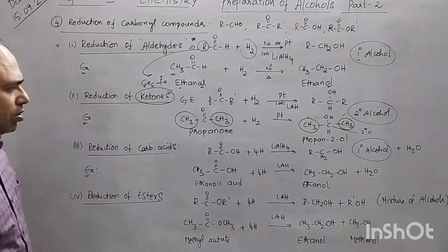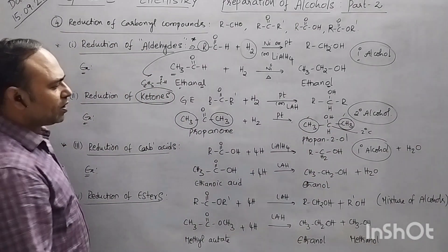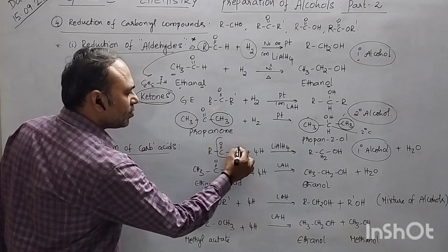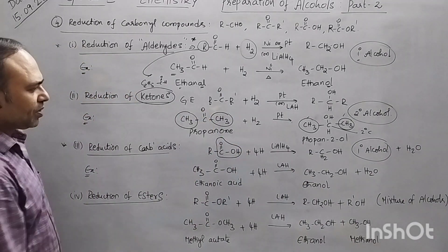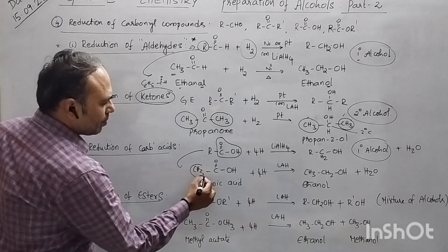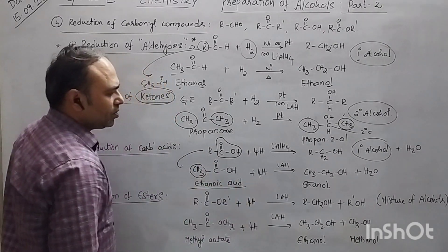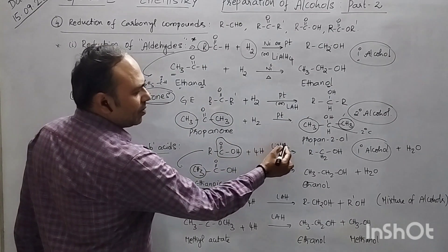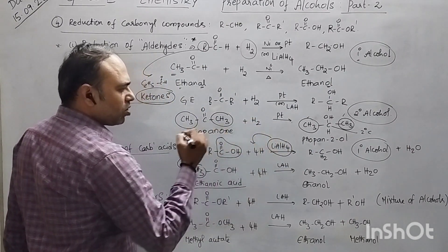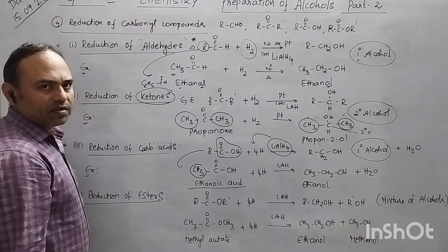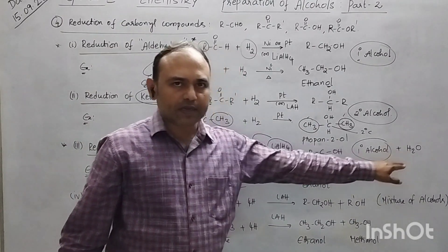The third sub-method is reduction of carboxylic acids. Carboxylic acid has a COOH group. In place of R, if we take a methyl group, the compound is ethanoic acid. In the general equation, lithium aluminium hydride is the reducing agent, which supplies four nascent hydrides. On reduction you will get a primary alcohol plus water.